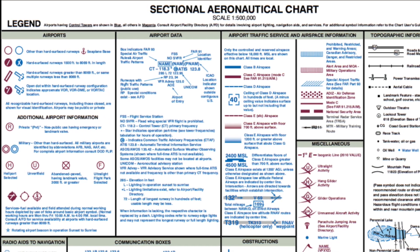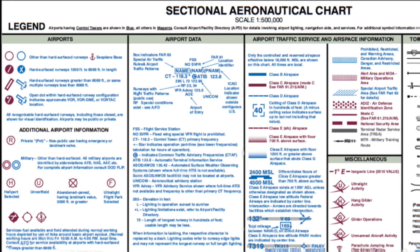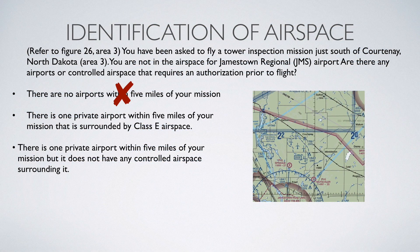Go ahead and pull up the sectional legend next to this question, and you'll notice that it tells us airports having control towers are shown in blue and all other airports are shown in magenta. Since the R in a circle is magenta, we know that this private airport does not have a control tower, which makes sense — a private airport is usually pretty small and typically they don't have control towers. But if we go back to the sectional itself, we should notice that there is no outline, either faded or dashed. All of this together can be taken to mean that there is no controlled airspace surrounding the Sprague airport.